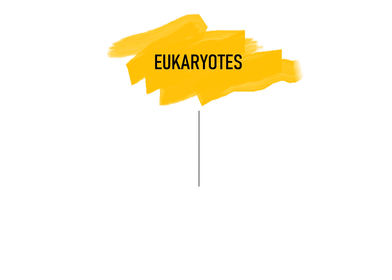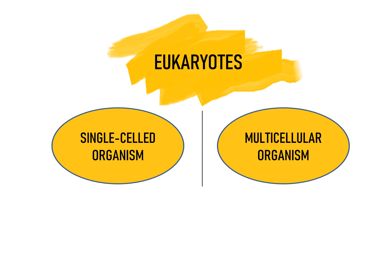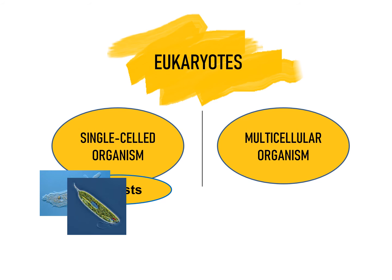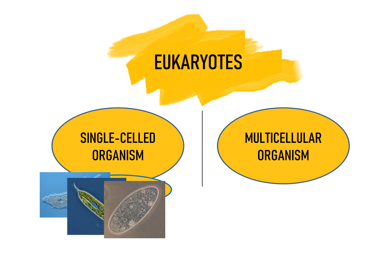Now let us know about the eukaryotes. Eukaryotes, on the basis of cell organization, are divided into two categories: single-celled organisms, where the single cell acts and functions as an individual, and multicellular organisms, where a cluster of cells together act as an organism. In single-celled organisms, protists are there.